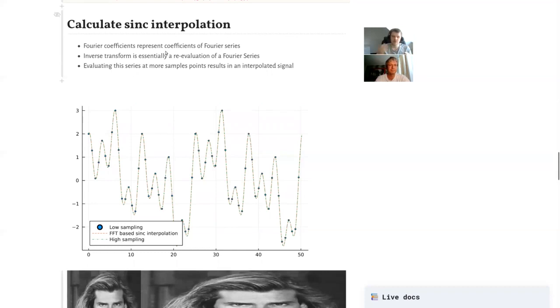And if you do an inverse transform, the inverse transform is essentially a reevaluation of a Fourier series. And if we now pad our signal with zeros, what we effectively do, we reevaluate this Fourier series, but at more sample points. So we don't add more information into the system. We just evaluate this analytical Fourier series at more sample points.